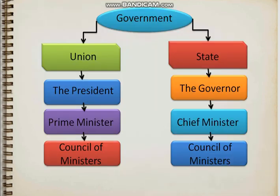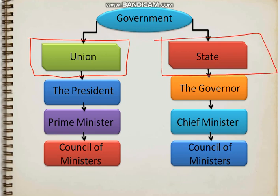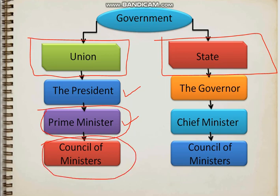How does the government run? The Government of India is basically divided into two parts: the Union and the State. Under the Union, the President is the head. Under the President comes the Prime Minister, who is elected by the people of India. Under the Prime Minister are the Council of Ministers — finance minister, home minister, defense minister, agriculture minister, and all other ministers. They are members of Parliament, known as MPs.